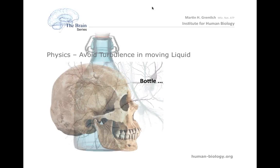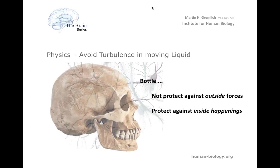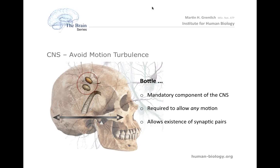That's how the human bottle principle looks. The skull is fundamentally misunderstood. The skull does not primarily protect against outside forces — it must, at all times, protect against inside happenings during every slight motion. It is an absolutely mandatory component of the central nervous system. Without the skull, the liquid would spill and disrupt synaptic connections. It is physically necessary to have a bottle around the central nervous system. The skull — together with the spinal vertebrae — allows the existence of synaptic pairs at all. It's all physics.